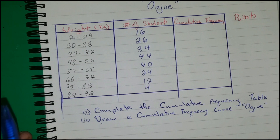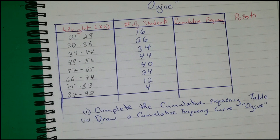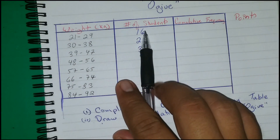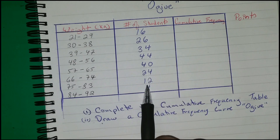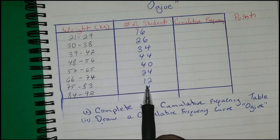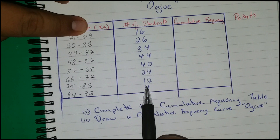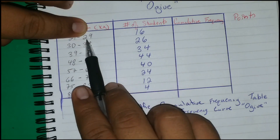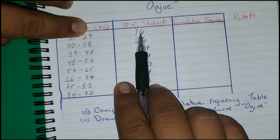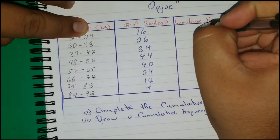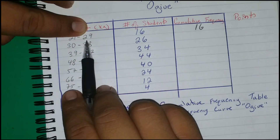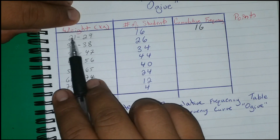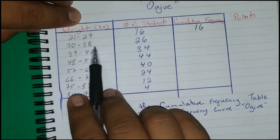The cumulative frequency is the running addition of the frequencies — in this case, the number of students. It tells you how many students have a weight of 29 kilograms or less, which is 16 students. So the first cumulative frequency remains 16.